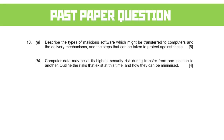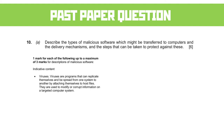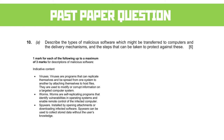Question 10 covers malicious software. Part A: describe the types of malicious software, delivery mechanisms, and steps to protect against them. The classic ones are viruses — programs that can replicate themselves, spread from one system to another, and modify or corrupt information. Worms are self-replicating and enable remote control. Spyware is often installed by opening attachments or downloading infected software, and it collects user data without their knowledge or consent, transmitting it over the internet.